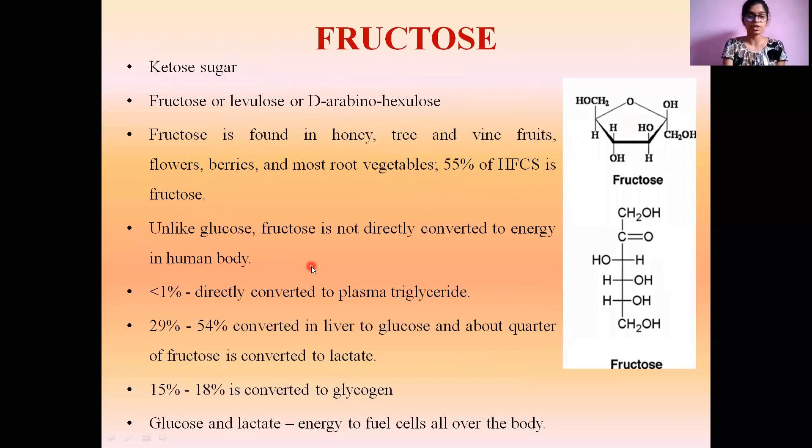Unlike glucose, fructose is not directly converted to energy in the human body. Instead, it is broken down into easily observable components: less than 1% is converted to plasma triglyceride, 29% to 54% is converted to glucose in the liver, about a quarter is converted to lactate, and 15% to 18% is converted to glycogen. Among these, the glucose and lactate are the energy providers to fuel the cells throughout the body.